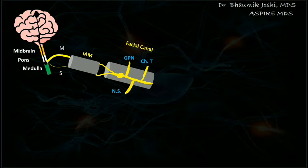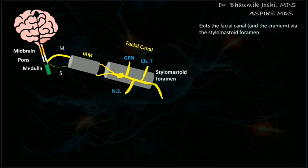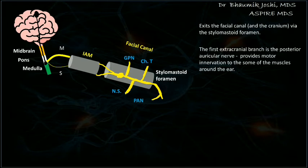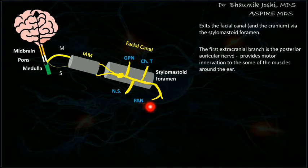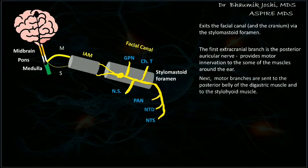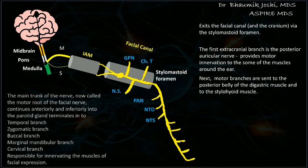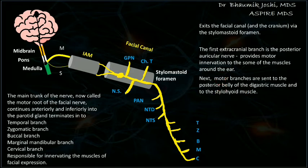The nerve exits through the facial canal from the stylomastoid foramen. Once it comes out, it has an extracranial course. The first branch given outside the cranium is the posterior auricular nerve, which supplies innervation to muscles around the ear. Then it gives the nerve to digastric and nerve to stylohyoid, which supply the muscles of the same name. It then enters the parotid gland and gives the terminal branches: TZBMC — temporal, zygomatic, buccal, marginal mandibular, and cervical nerves of the facial — all supplying the muscles of facial expression.